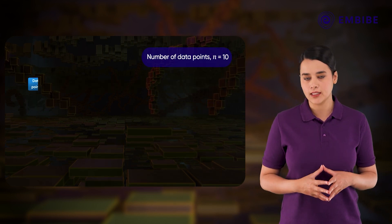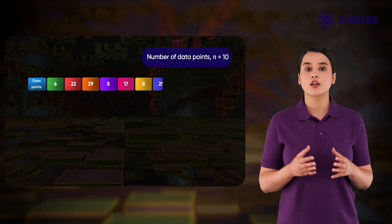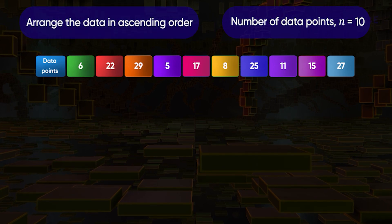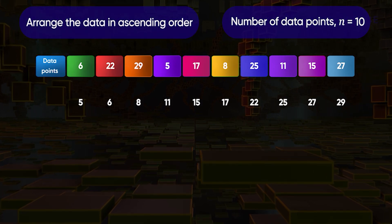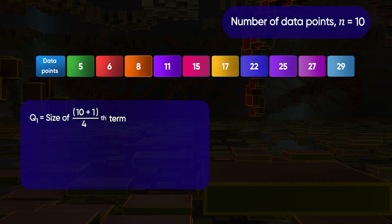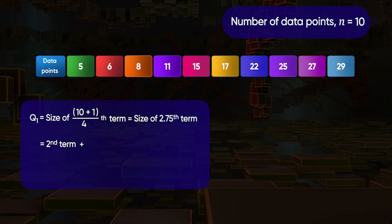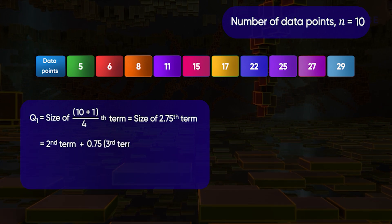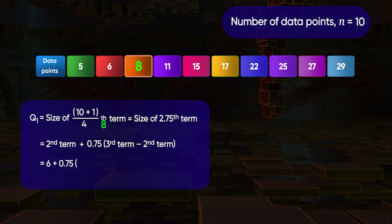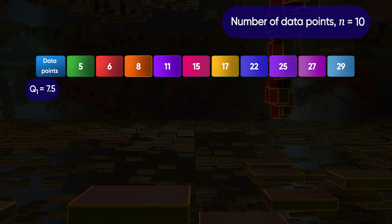Now let us take another example. Consider the set of ten data points: 6, 22, 29, 5, 17, 8, 25, 11, 15, and 27. As the first step, arrange the data points in ascending order. Q1 is at position (10+1)/4, that is the 2.75th term, which equals the 2nd term plus 0.75 times (3rd term minus 2nd term) = 6 + 0.75 × (8 − 6) = 7.5. So Q1 equals 7.5.